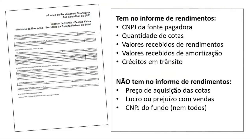No informe de rendimento, as informações são padronizadas, mas a aparência não. Você vai encontrar o CNPJ da fonte pagadora — sempre tem essa primeira informação — porém, a gente vai ver que nem sempre é esse CNPJ que você vai utilizar. Quantidade de cotas de um fundo que você tinha em 31/12/2021, para declarar em bens e direitos — é só o que você tinha no último dia do ano. Valores recebidos de rendimentos, valores recebidos de amortização se for o caso, e créditos em trânsito se aconteceu.